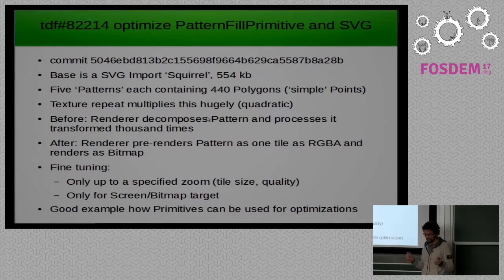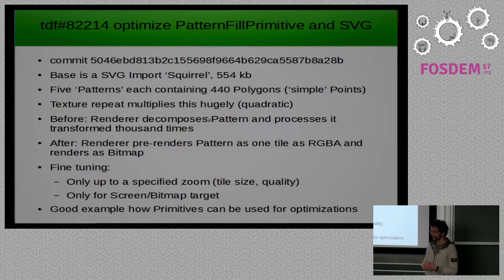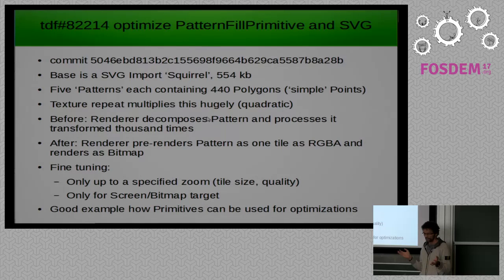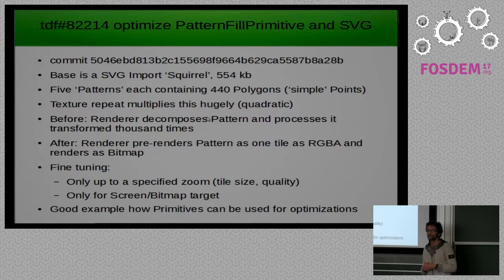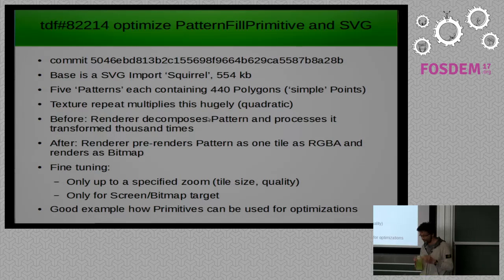The solution I decided on: don't do that. Just pre-render one of the tiles as RGBA and render it as a bitmap. This works, but you have to do some fine-tuning because the quality of pre-rendered bitmaps is of course not as good. You have to take care of the output target — is it a bitmap target like screen, or do you have metafile, PDF export, or printing? Then you should avoid doing that. And only up to a specified zoom level, because when you zoom deeply in, you automatically don't have the problem because only a few tiles are rendered.